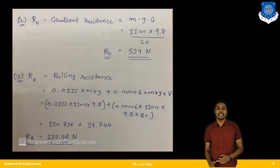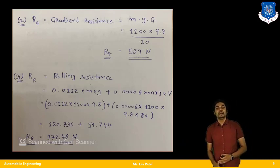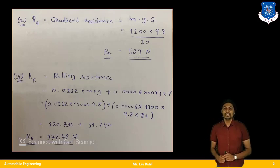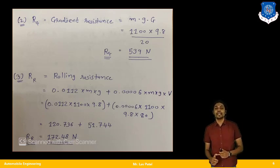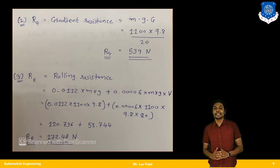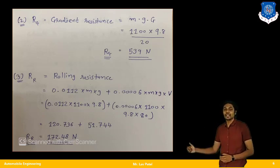Moving further, we calculate the second resistance — gradient resistance Rg. The formula is Rg = M × g × G, where M × g is the weight and capital G = 1/20 is the gradient ratio given in our data. After solving, the gradient resistance Rg = 539 N.